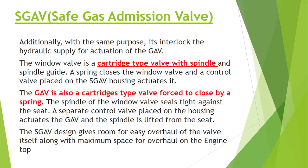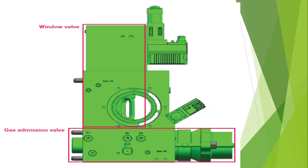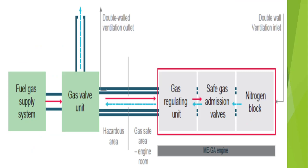Similarly, the GAV is also a cartridge type valve forced to close by a spring. The spindle of the window valve seals tight against the seat. A separate control valve placed on the housing activates the GAV and lifts the spindle from the seat. The SGAV design provides room for easy overhauling of the valve along with maximum space on the engine top for overhauling, since both valves are combined into one unit, reducing the overall space requirement.